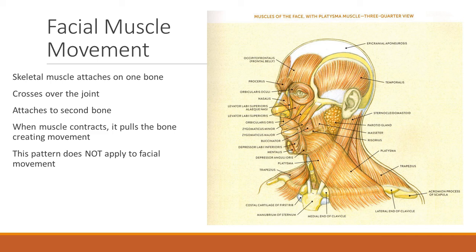In our face we only have one bone really — the cranium — and also the mandible, so two bones in the cranium. Not all of the muscles cross over a joint. Muscles will usually be attached either to some soft tissue or to the cranium or the mandible, pulling the skin and tissue, or pulling the mandible up, down, or sideways.